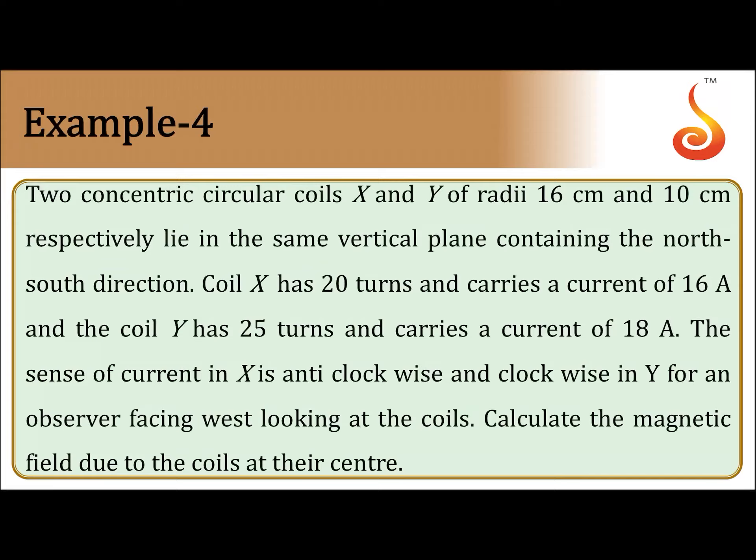Coil X has 20 turns and carries current 16 Ampere and Y has 25 turns and carries current 18 Ampere. The sense of current in X is anti-clockwise and clockwise in Y for an observer facing west looking at the coils. Calculate magnetic field due to the coils at the center.